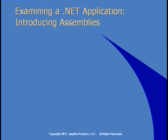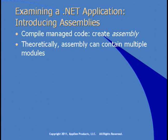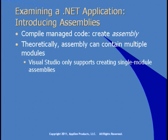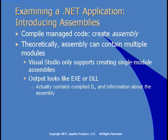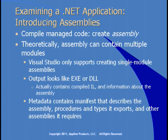We're going to spend some time looking at a .NET application, so we need to think about what an assembly is. An assembly is what you get when you compile managed code. Theoretically, an assembly can contain multiple modules, although Visual Studio only supports creating a single-module assembly. The output is either an .EXE or a .DLL, and these contain compiled IL and metadata about the assembly. That metadata contains a manifest that describes the assembly, the procedures and types it exports, and other assemblies it requires.